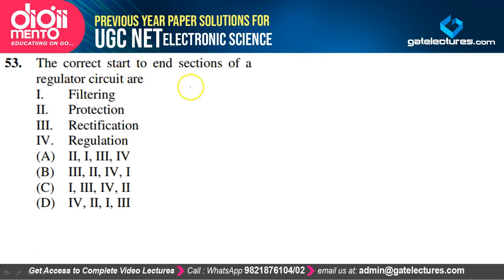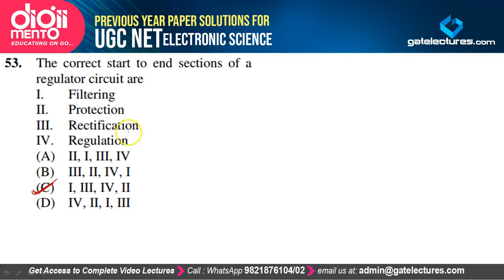The correct start-to-end sections of a regulator circuit: filtering → rectification → regulation → protection. Option C is correct.